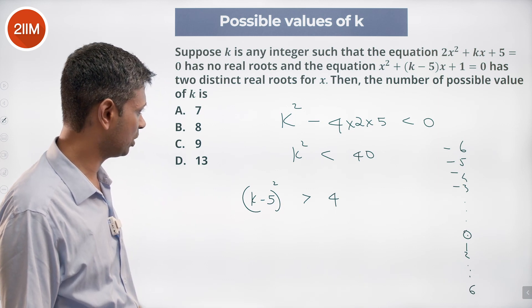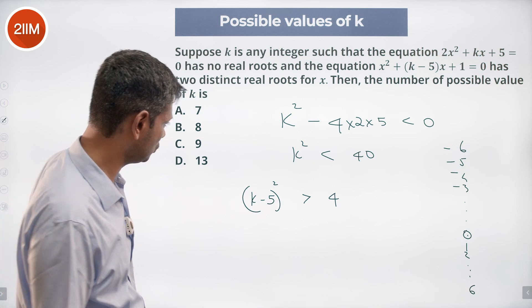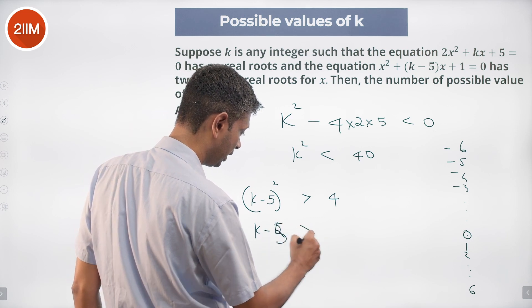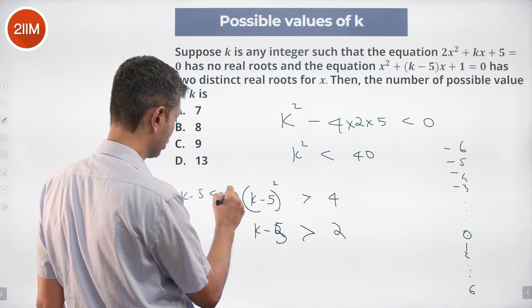I think we can substitute and try it out. (k - 5) should be greater than 2 or (k - 5) is less than -2.